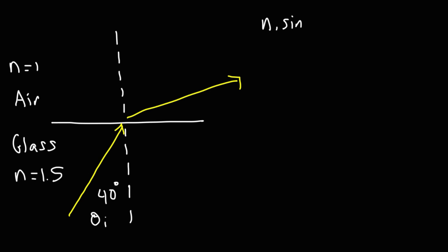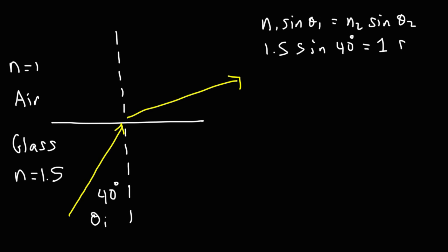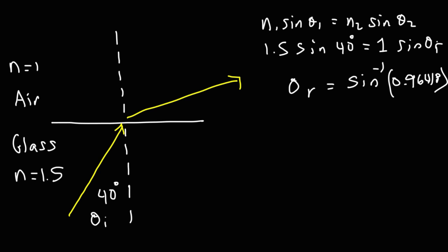Using Snell's law: N1 sine theta 1 equals N2 sine theta 2. N1 for glass is 1.5 times sine 40 degrees, equal to N2 for air (which is 1) times sine theta 2. So 1.5 times sine 40 is 0.96418, meaning the refracted angle equals arc sine of 0.96418, which gives 74.6 degrees.